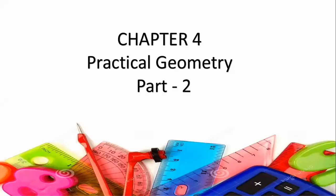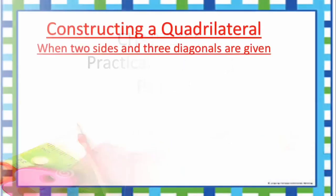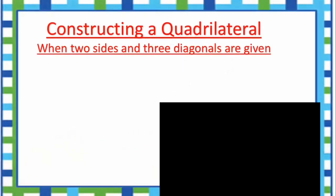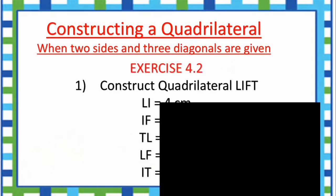Hello everyone, welcome back to Sapna's Mapbook. Today we continue our lesson on Practical Geometry. In the previous class, we discussed how to construct a quadrilateral when the lengths of four sides and a diagonal are given. Today we will study how to construct a quadrilateral when two sides and three diagonals are given. We will do a few questions from textbook exercise 4.2.